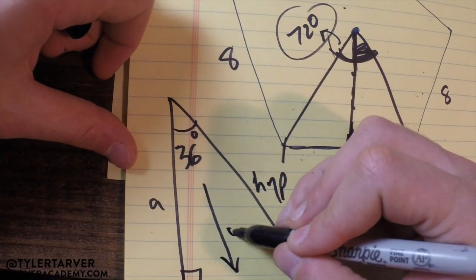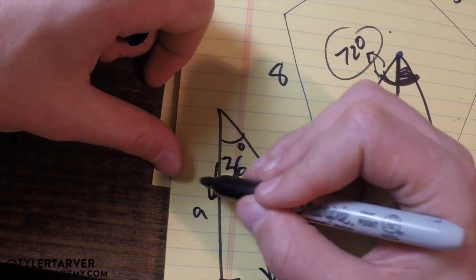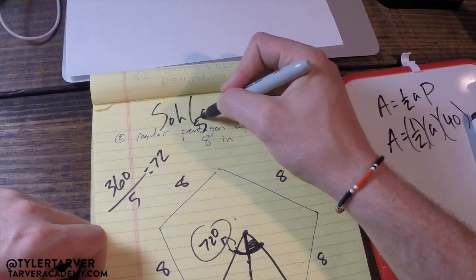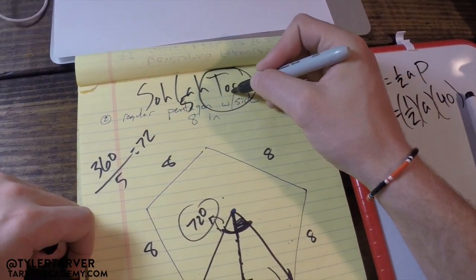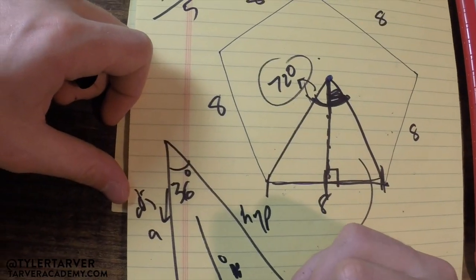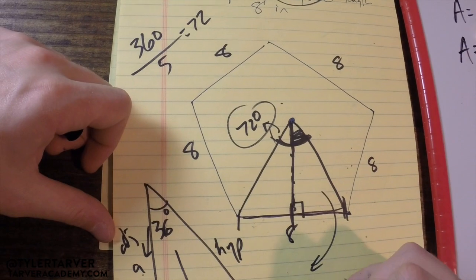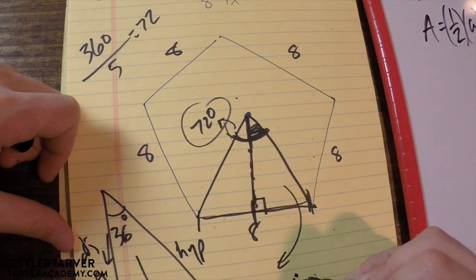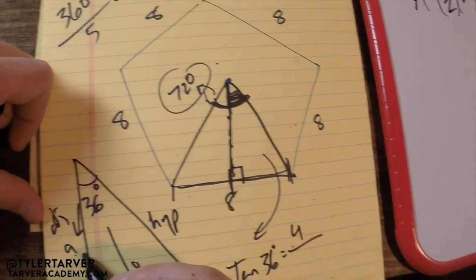We know our tangent is our opposite over adjacent. That's what we have and that's what we want. So we've got tangent 36 equals opposite, which is 4, over adjacent, which is a.